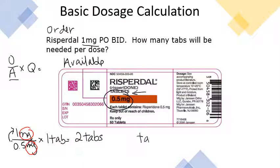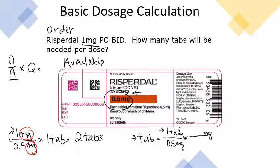You can also use dimensional analysis. You're solving for how many tabs to give the patient, so tabs go in the numerator: 1 tab is 0.5 milligrams. Write your order of 1 milligram, put 1 to hold the place value, then cancel out like units — milligrams over milligrams. Multiply across the top: 1. Multiply across the bottom: 0.5. Your answer is still 2 tabs.